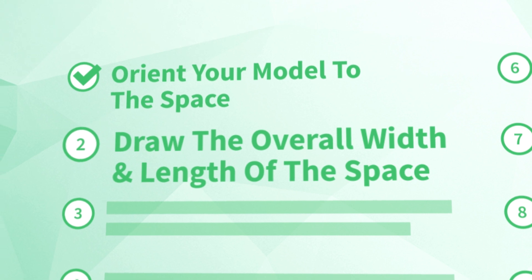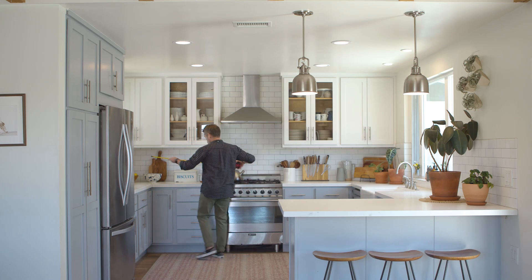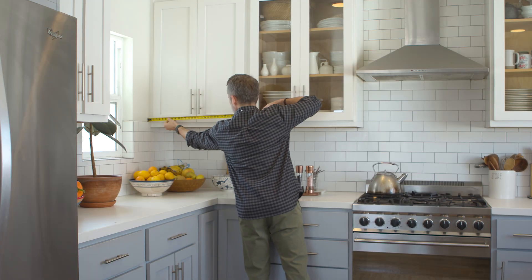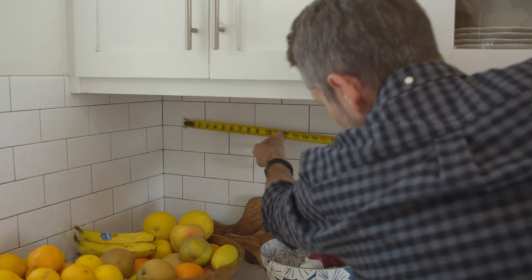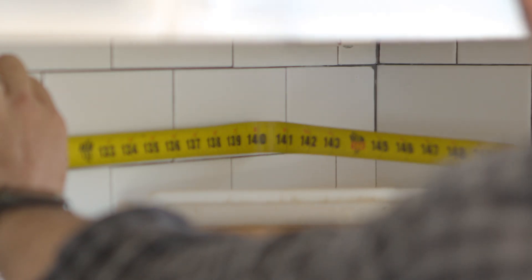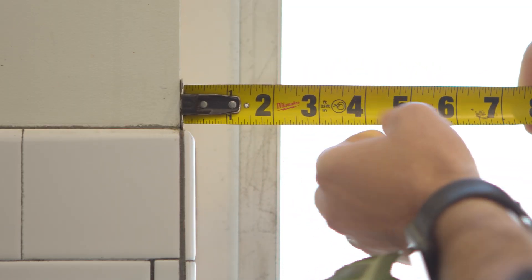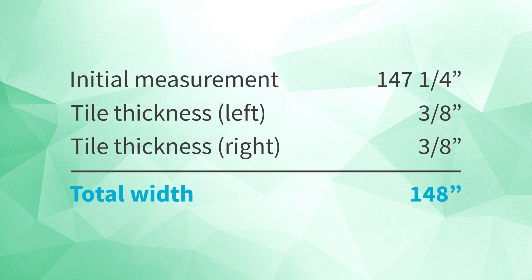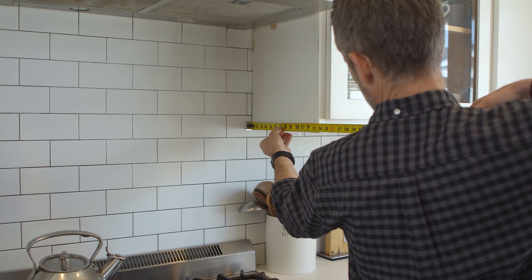Number two: draw the overall width and length of the space. Now it's time to break out the tape measure and get started. The first thing we'll want to determine is the overall width and length of the room. To do that, we'll need to measure from the inside face of one wall to the inside face of the opposite wall. Try to measure from a spot where you can place your measuring tape directly against the wall itself, not against a baseboard or tile, since the thicknesses of those objects can throw off your overall measurements. If that's not possible, you can measure from the face of the tile to the face of the tile, then measure the thickness of the tile itself, add those numbers together accounting for both sides, and that will give you the total overall width.